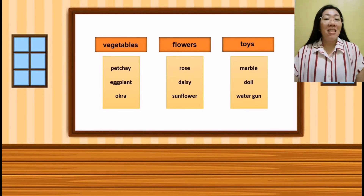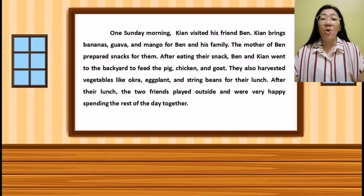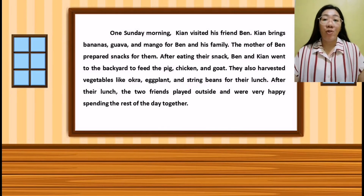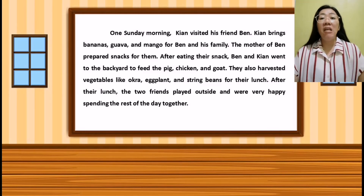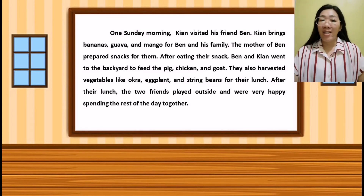Give yourself a big clap, kids, because you are very smart in doing our activities. Now I want you to listen to me attentively because I will tell you a very short story and I will ask questions afterwards. Are you ready? One Sunday morning, Kian visited his friend Ben. Kian brings bananas, guavas, and mango for Ben and his family. The mother of Ben prepared snacks for them. After eating their snacks, Ben and Kian went to the backyard to feed the pig, chicken, and the goat. They also harvested vegetables like okra, eggplant, and string beans for their lunch. After their lunch, the two friends played outside and were very happy spending the rest of the day together. Did you understand the story?